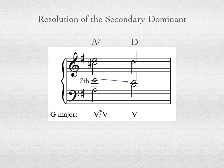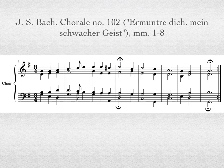Remember, the slash notation means V7 of V. Secondary dominant chords do not always have a chordal 7th, and can be found as a simple triad.